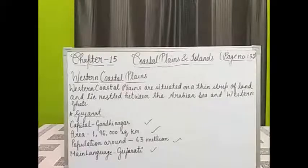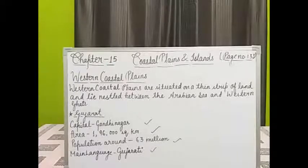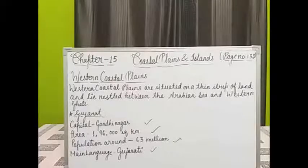Textile, petroleum, salt, khadi, handloom, fertilizers, diamond cutting, and dairy farming are the major industries of the state. Means, except farming, these major and important industries are also carried out in the state.